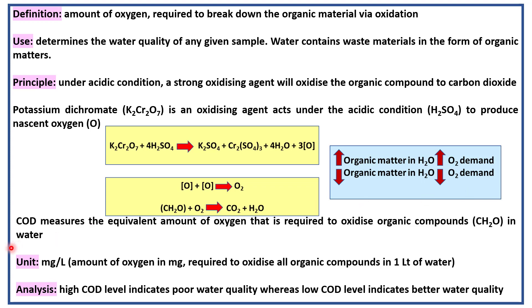The unit of COD is milligrams per liter — that means it is the amount of oxygen in milligrams required to oxidize all organic compounds in one liter of water.